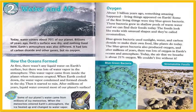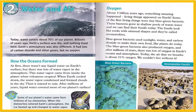How the Oceans Formed. At first, there wasn't any liquid water on Earth's surface, but there was lots of water vapor in the atmosphere. This water vapor came from inside the planet when volcanoes erupted. When Earth cooled down, the water vapor condensed and formed clouds in the sky. Then it started to rain. After millions of years, liquid water covered most of our planet's surface.